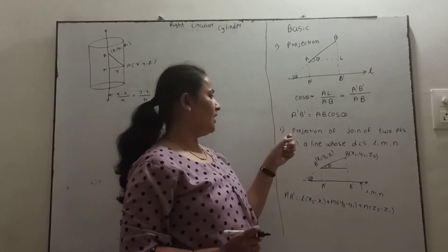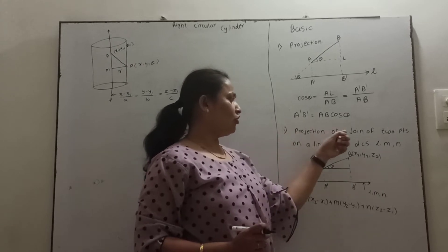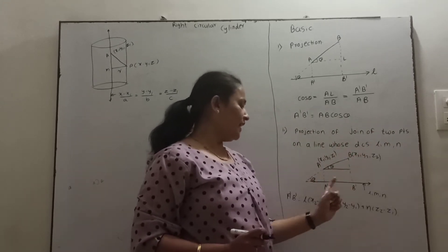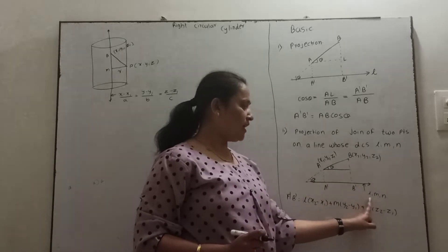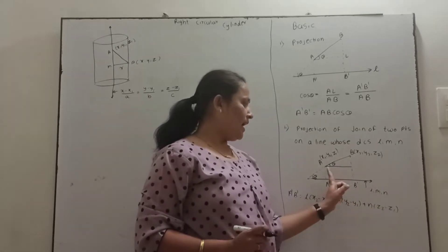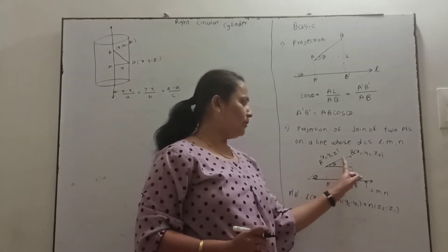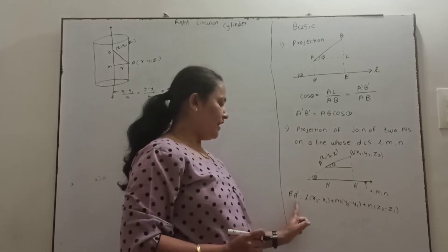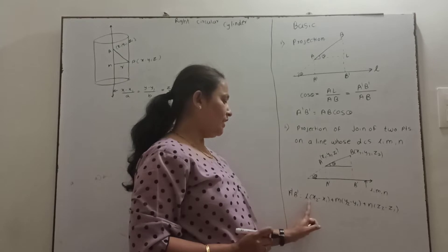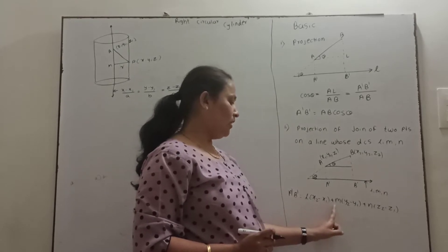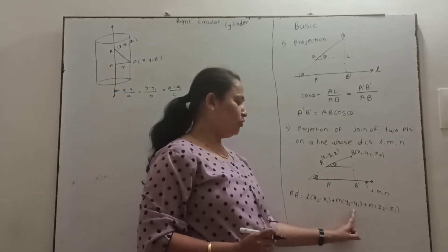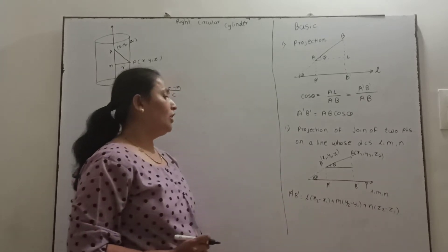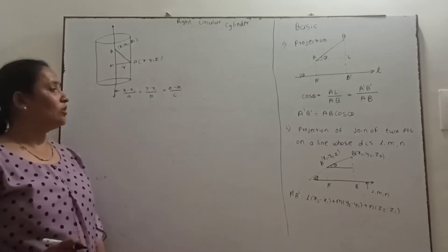If we want to find the projection of the join of two points on a line whose direction cosines are l, m, n, the projection A'B' is given by: A'B' = l(x₂ − x₁) + m(y₂ − y₁) + n(z₂ − z₁). Now we define the right circular cylinder.